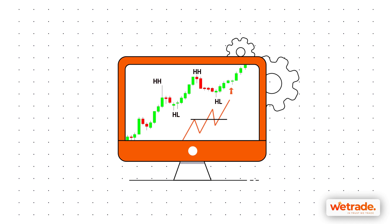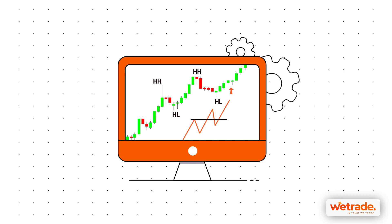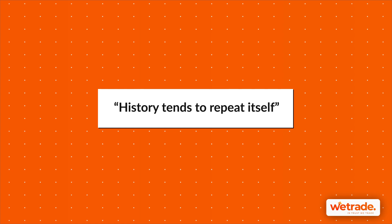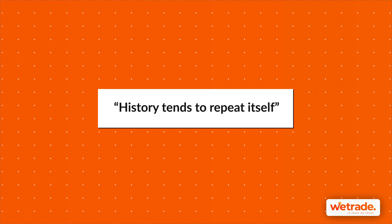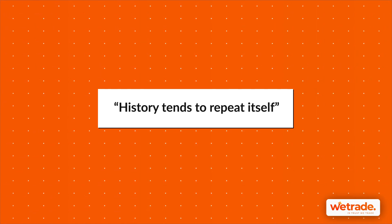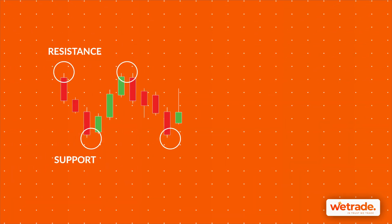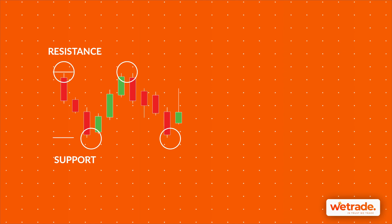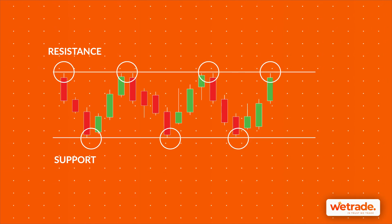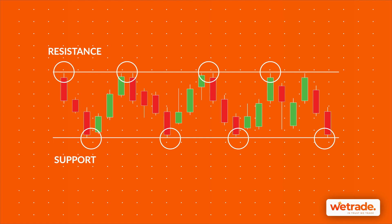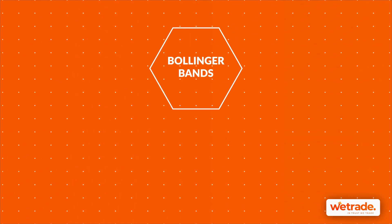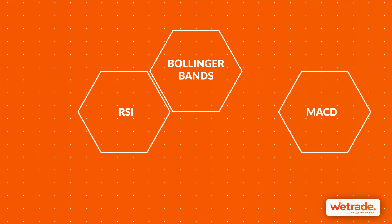This simply means that all known fundamental information is priced into the current market price. Technical analysis looks at the rhythm, flow, and trends in price action. Have you ever heard the old adage that history tends to repeat itself? Well, that's basically what technical analysis is all about. If a certain price held as a major support or resistance level in the past, forex traders will keep an eye out for it and base their trades around that historical price level. The most common indicators of technical trading are Bollinger Bands, RSI, MACD, and moving averages.